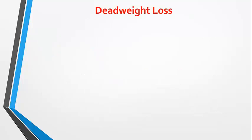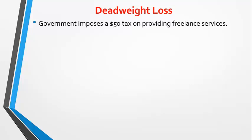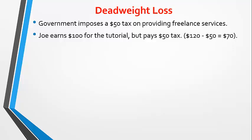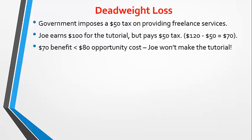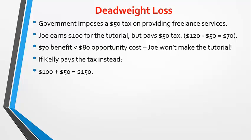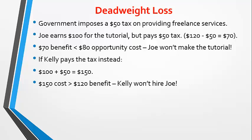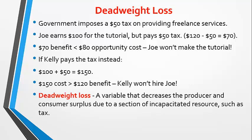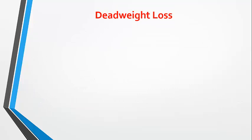Now suppose the government imposes a $50 tax on providing freelance services. Joe would earn $100 for making a tutorial, but he would have to pay the $50 tax, leaving him with $70. That $70 benefit is less than what Joe could earn elsewhere, so Joe wouldn't make the tutorial. What if Kelly pays the tax instead? She'd pay Joe $100 and then have to pay the $50 tax, but the $150 cost is greater than the $120 benefit she gained from the tutorial, so Kelly won't hire Joe. The tax caused a deadweight loss, meaning it prevented a market transaction from happening and left otherwise useful resources idle. So consumer and producer surplus are both lost as the transaction never happens.